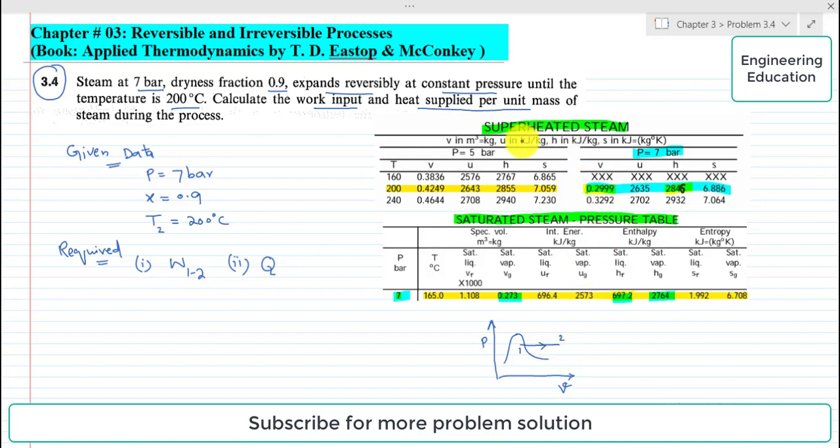So at state 1, we will read the properties from saturated steam pressure table. For saturated steam, if we check the specific volume at 0.1, we can write that v1 equals x times vg, where x is the dryness fraction and vg is the value of saturated vapor specific volume.